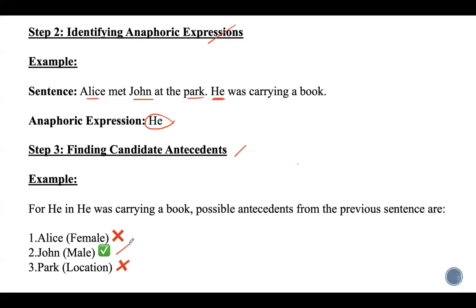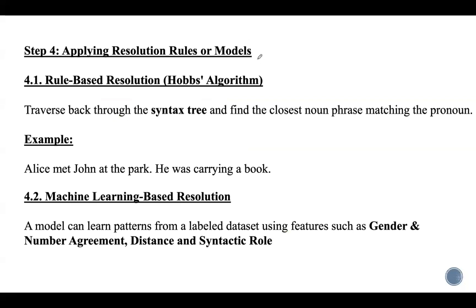Since 'he' is a male pronoun, John is considered the best candidate. Step 4 is applying resolution rules or models. Using rule-based resolution — Hobbs' algorithm — we traverse back through the syntax tree and find the closest noun phrase matching the pronoun. Here, 'he' is a male singular noun, so the closest preceding male singular noun is John. John is selected as the antecedent.